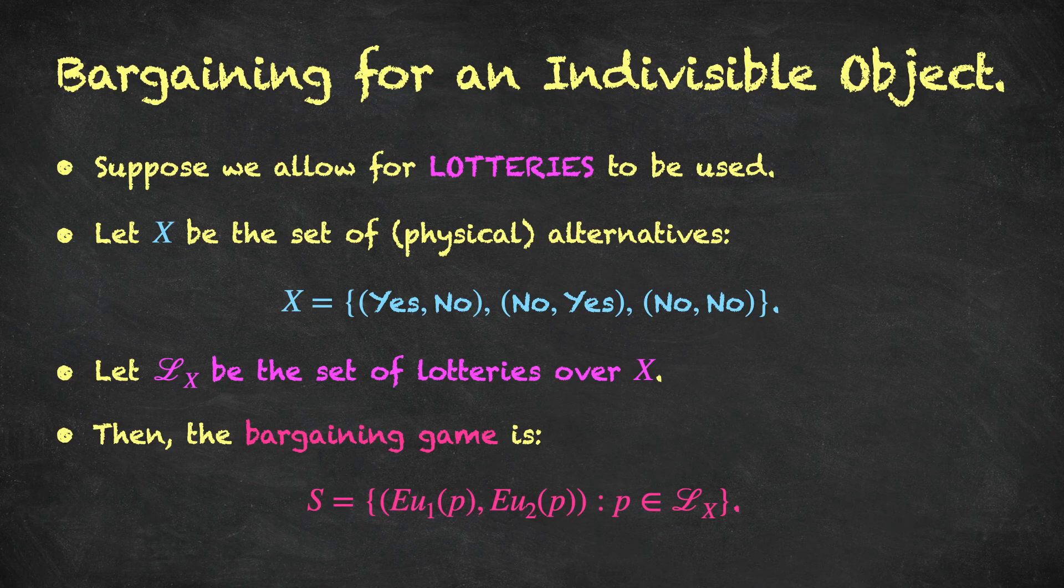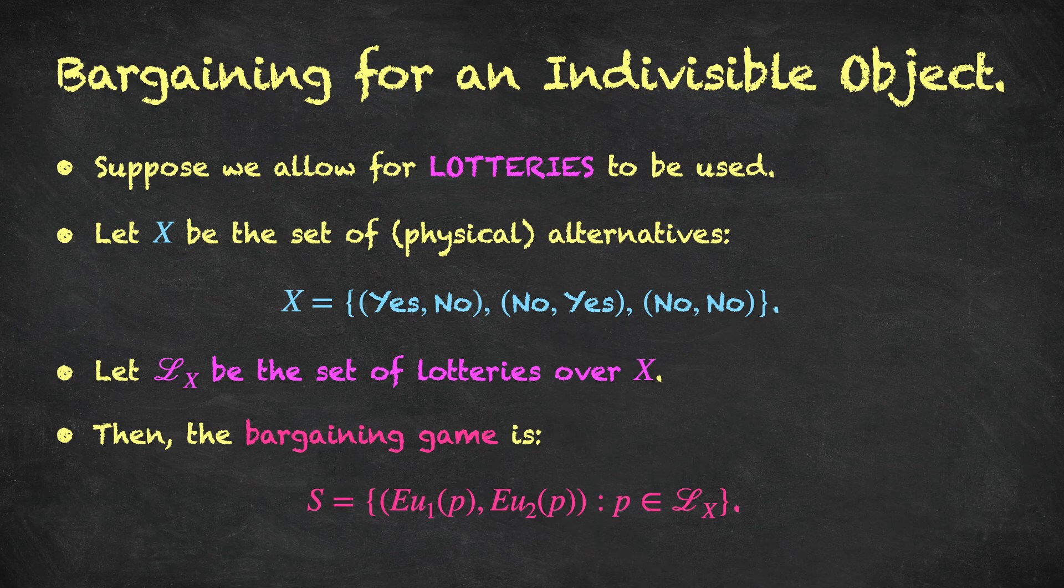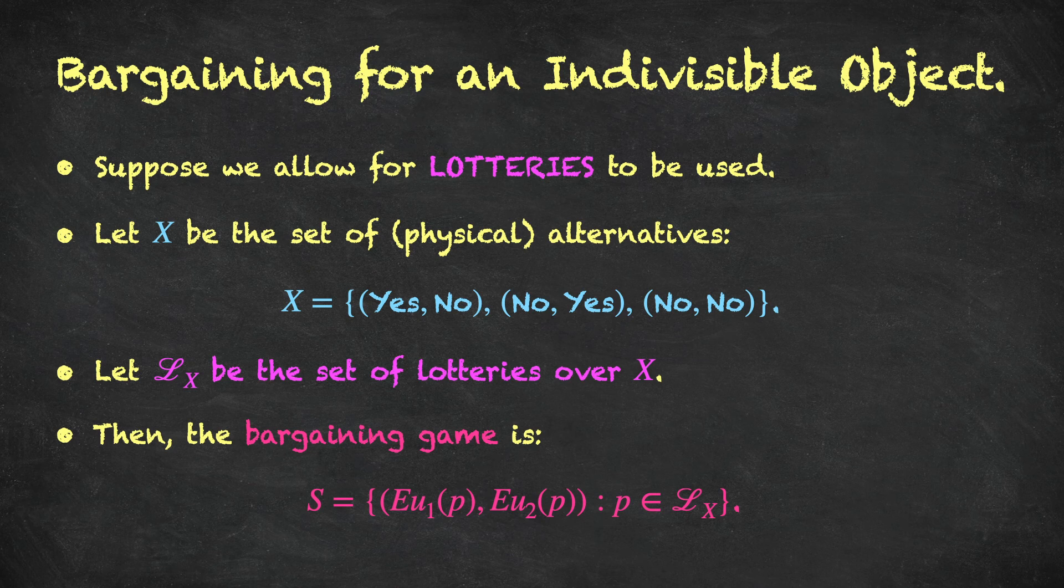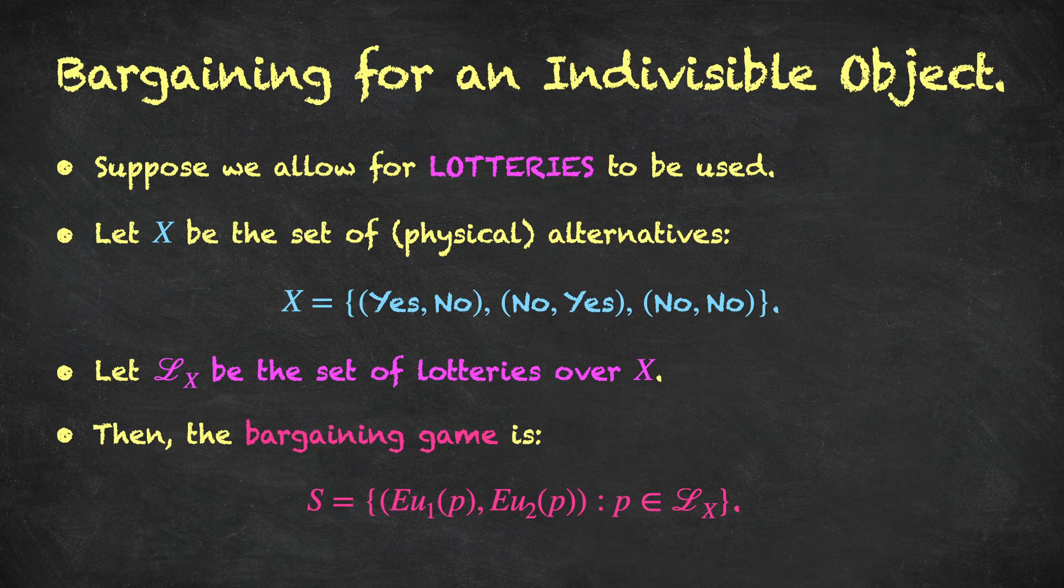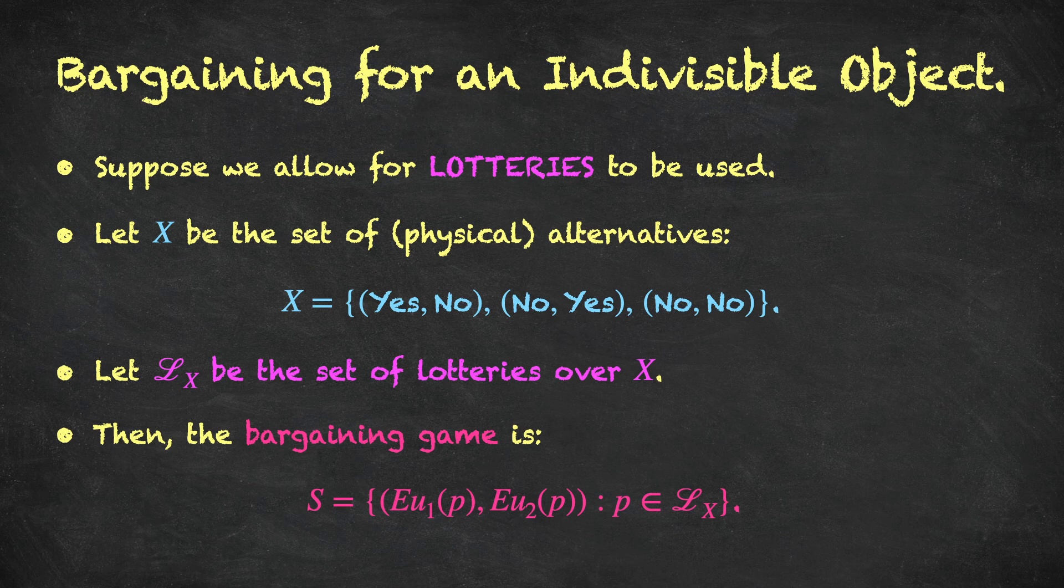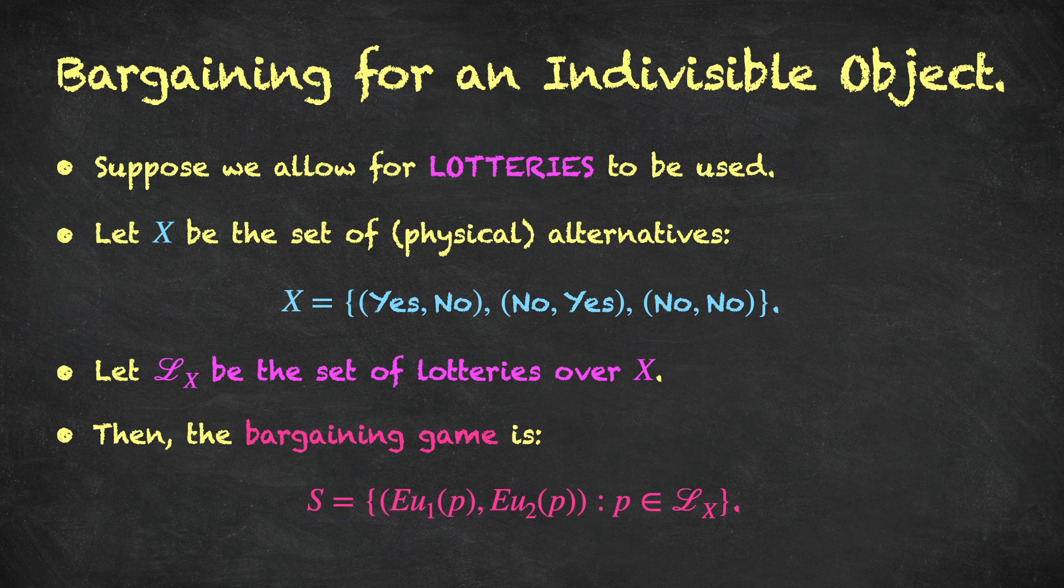So, how can we motivate Nash's assumption that bargaining games are convex sets in a situation like this? The idea is to allow for lotteries to be used. So, if we let capital X be the set of physical alternatives, so these are the actual outcomes, not the utility numbers, but the actual outcomes. So, there are three possibilities: a yes-no outcome, player one gets the painting, player two doesn't; a no-yes outcome; and a no-no outcome, where neither player gets the painting. Well, we could take this set X and then consider a set L of X, I've denoted this calligraphic L of X, as the set of lotteries over X. So, we could essentially flip a coin to see who's going to get this painting, or take any other lottery over these three particular outcomes. In this case, the bargaining game becomes the following: S is equal to the set of pairs of expected utility numbers for particular lotteries P, where P are lotteries over this set of physical alternatives.